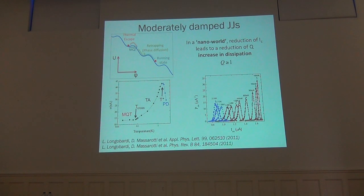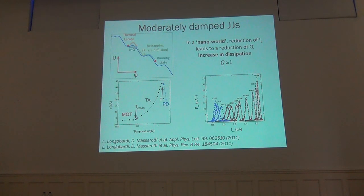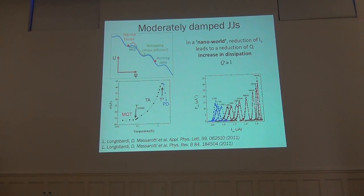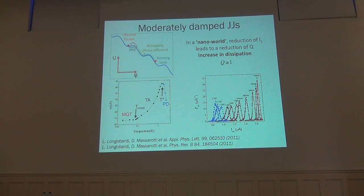Recently, the technologies applied to superconducting junctions have led to a reduction of the dimensions of the junctions and therefore a reduction of the critical current values. This means that Josephson junctions fall in the moderately damped regime with the quality factor Q of the order of one. In this case the phase dynamics is a little bit different, since after the escape event the phase particle may be retracted in one of the following minima. This process of escape and retrapping may occur multiple times, generating a diffusive motion of the phase particle — a regime known as the phase diffusion regime.